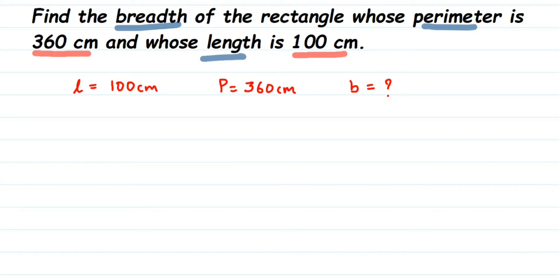P represents perimeter. Perimeter of rectangle is 2 into L plus b. Sometimes people also use 2 into length and 2 into breadth. Both the formulas are same. We can use any one.